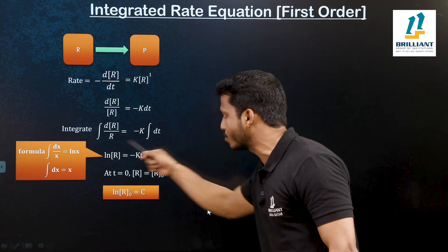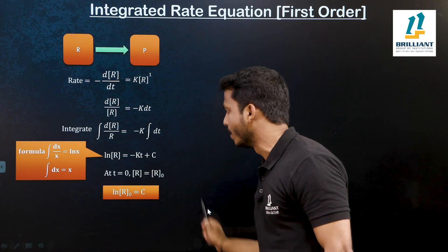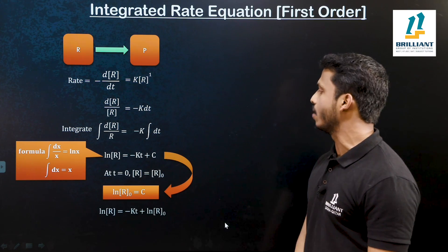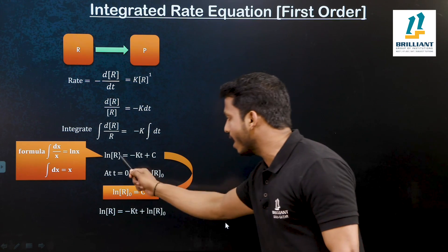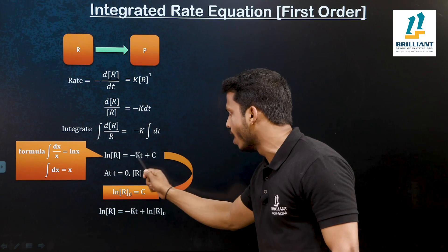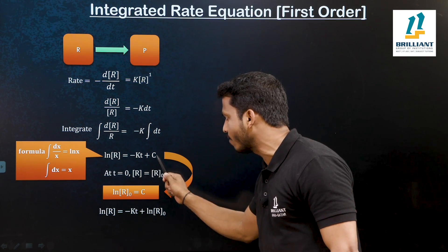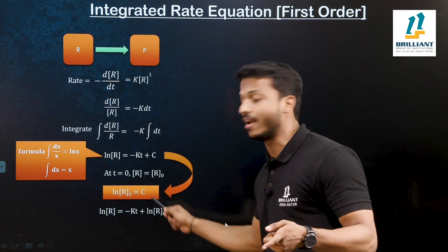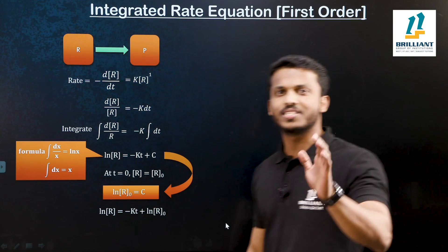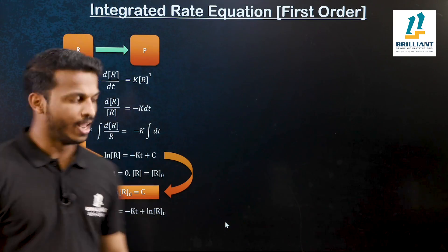Now substituting the value of c back into the integrated equation, the equation becomes: ln R is equal to minus kt plus ln R₀. This is our integrated equation.